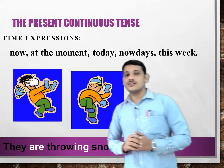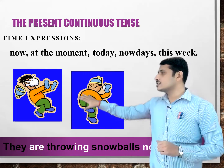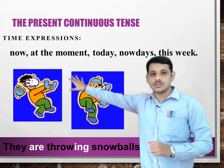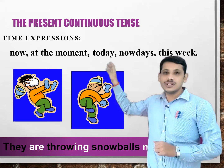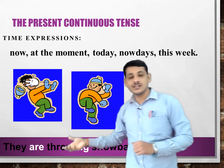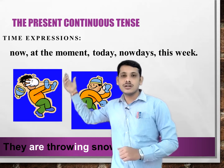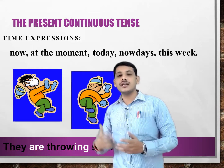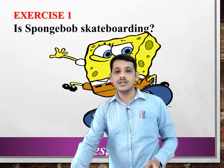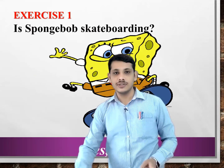An important thing to remember is that when we use present continuous tense, you will mostly find these signal words: 'now', 'at the moment', 'today', 'nowadays', 'this week', 'this year', 'this month'. These words indicate we are talking about the present, and the -ing form tells us it's a continuous action.